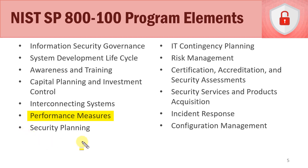Security planning is about making sure we are planning our security program in an effective manner. IT contingency planning plays a big role in risk management whenever we have incidents and disasters. Risk management is something we already talked about. Certification, accreditation, and security assessments — certification and accreditation is the process of certifying and accrediting a system or application before it goes into the production environment; it's reviewed and signed off on. We don't cover the C&A process in depth in this course, but it does play a big role in information security.